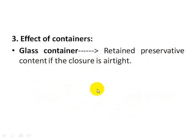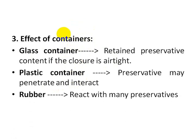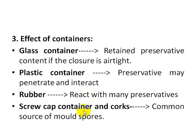Another important parameter is the effect of containers. Glass containers are generally ideal because they retain the preservative content, provided the closure is airtight. In case of plastic containers, preservatives generally penetrate or absorb into the plastic and interact, so we have to select preservatives that have less interaction with plastic containers. Rubber also shows interaction with many preservatives. Screw cap containers and corks are generally a common source of mold spores, so we have to select preservatives that can kill mold spores in such products.